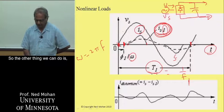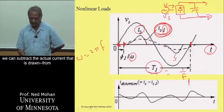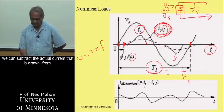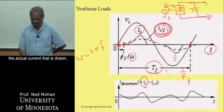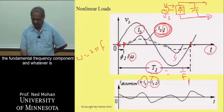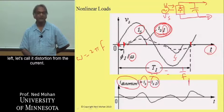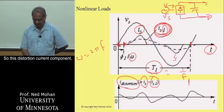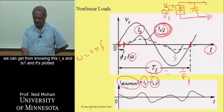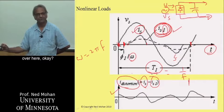So the other thing we can do is we can subtract the fundamental frequency component from the actual current that is drawn, and whatever is left, let's call it distortion in the current. So this distortion current component we can get from knowing IS and IS1 and is plotted over here. And ideally, if the current was sinusoidal, this distortion component would be zero.